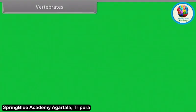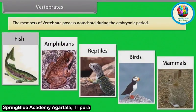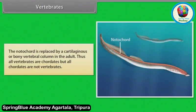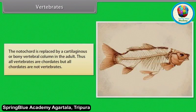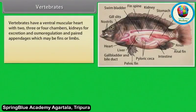The members of Vertebrata possess notochord during the embryonic period. The notochord is replaced by a cartilaginous or bony vertebral column in the adult. Thus, all vertebrates are chordates, but all chordates are not vertebrates. Vertebrates have a ventral muscular heart with two, three or four chambers, kidneys for excretion and osmoregulation, and paired appendages which may be fins or limbs.